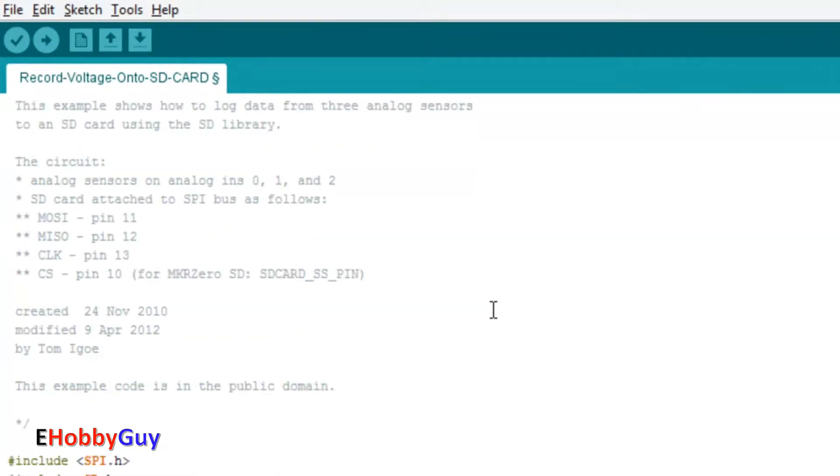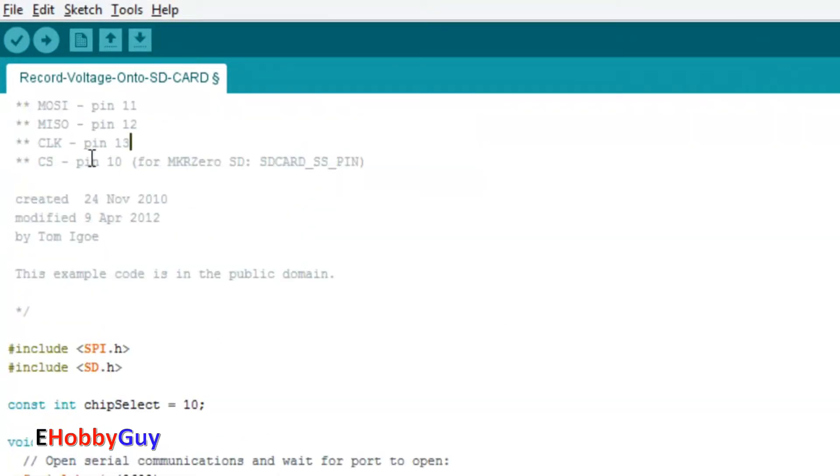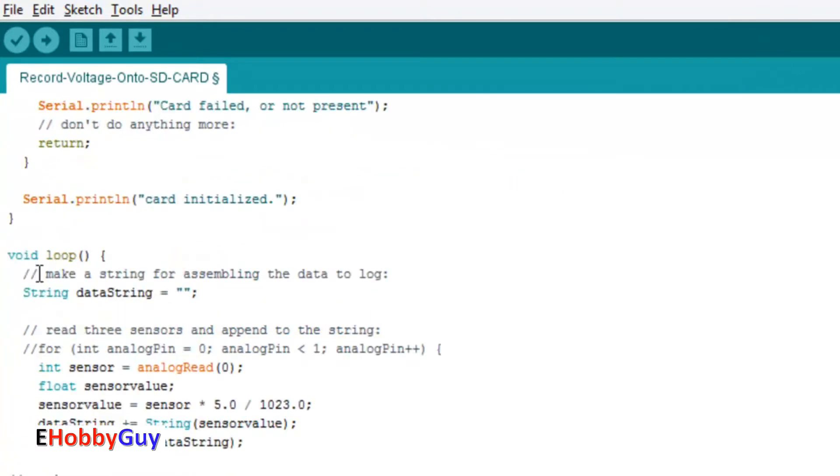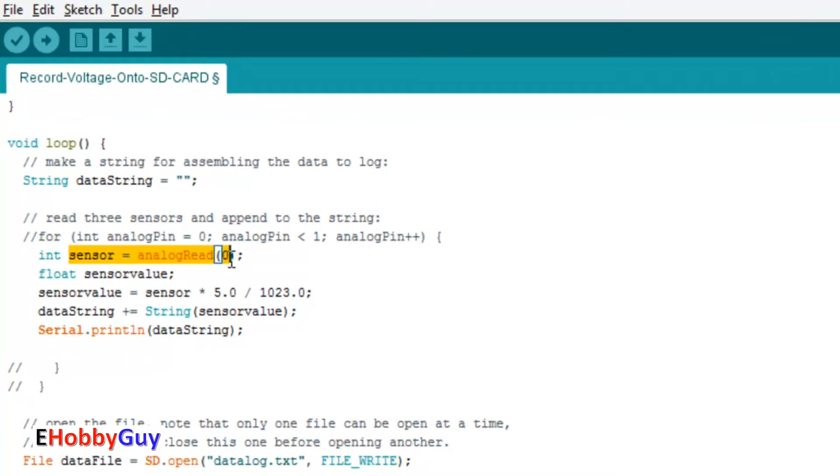Here's the sketch. I used chip select pin number 10 so I had to change that from the default. We begin serial communication, begin our loop, and define our data string which is what's going to get written into the SD card. I declare the sensor value as it reads from analog pin zero.